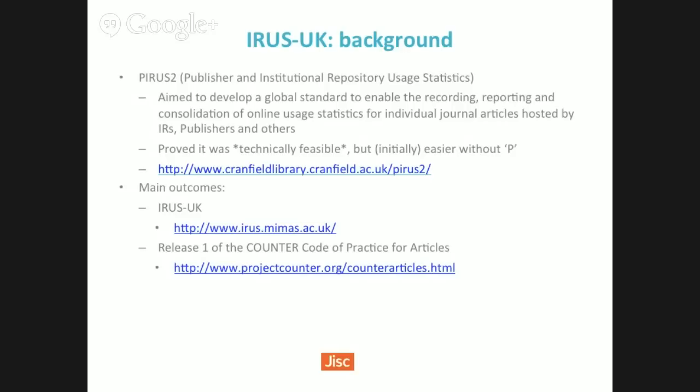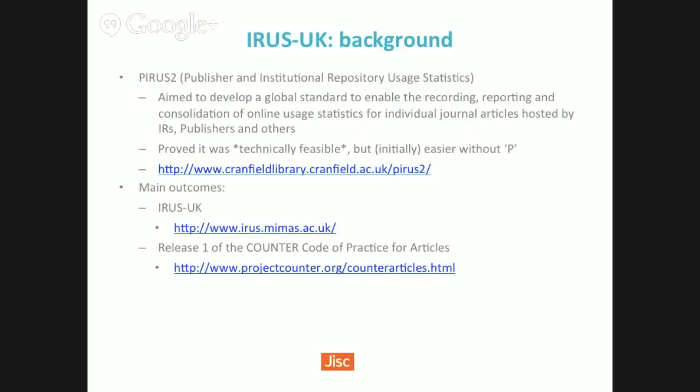For background, they did a project called Paris to look at whether it was technically feasible to collate article-level usage statistics irrespective of where the article resided. The answer was yes. They then took it forward, removing the publisher component — the P stood for the publisher — due to business drivers, focusing purely on institutional repositories. That scoped it better and there seemed to be a case for doing something useful, leading to IRIS.